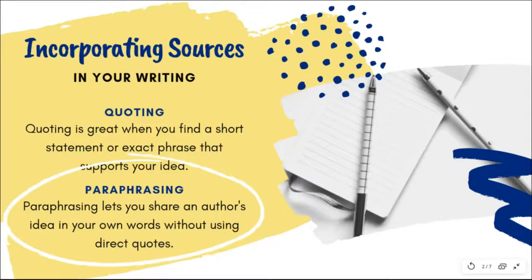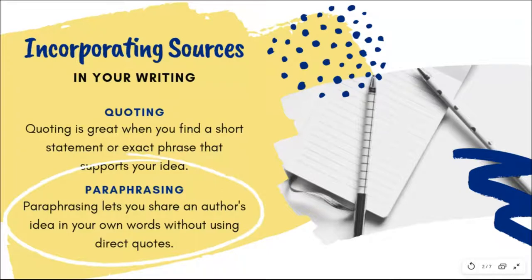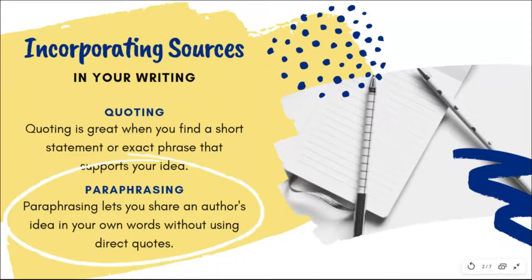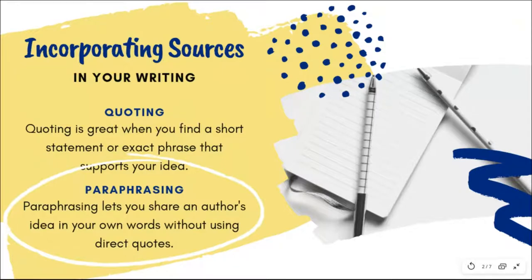You can incorporate sources into your own writing by quoting directly or by paraphrasing. Most of the time when you cite a source you want to summarize or paraphrase. Direct quotation should be used sparingly, and paraphrasing allows you to demonstrate that you understand what you have read and that you can apply this knowledge. It also allows you to maintain your own personal style and the smooth flow of your essay.